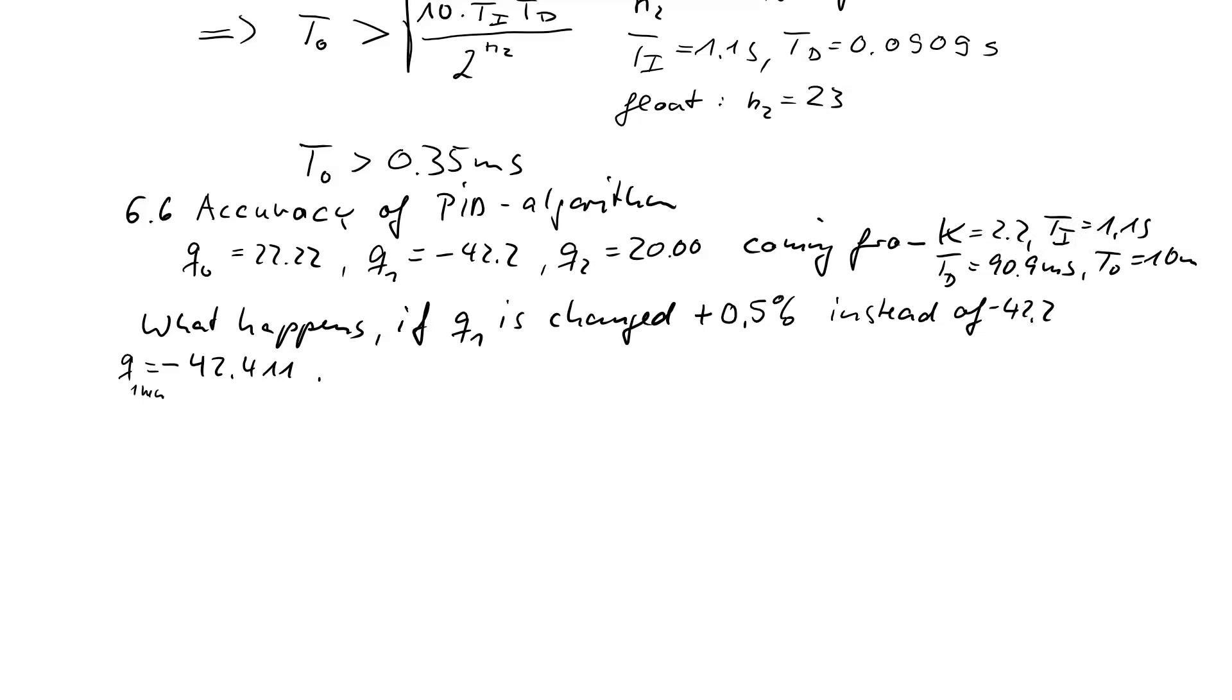Very simple. I remember the well-known equations. Q0 is K times 1 plus sampling time divided by Ti plus differentiation time constant divided by T0. Q1 is K times negative 1 plus 2 times Td over T0. Q2 is K times Td over T0. So you have three equations. If Q1, Q2, and Q0 are given, then you can solve these equations to the now new values of K, Ti, and Td.